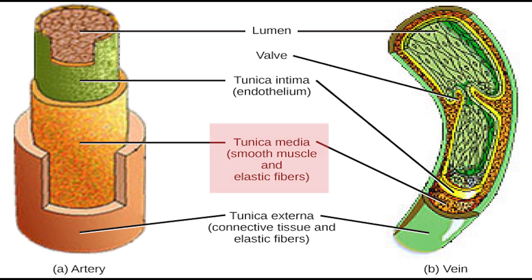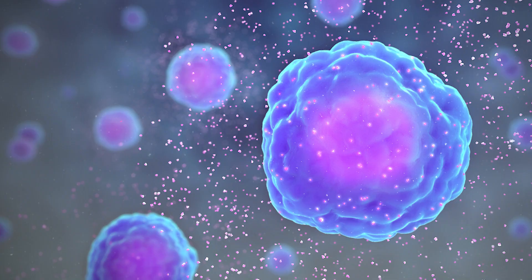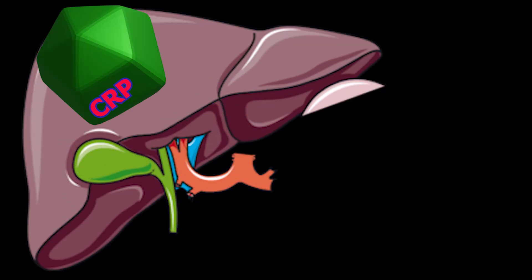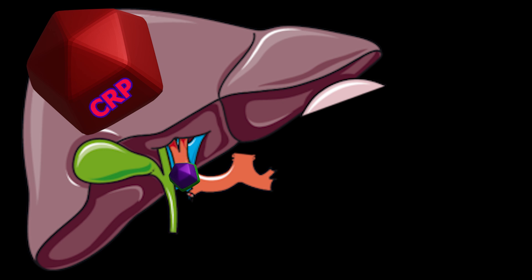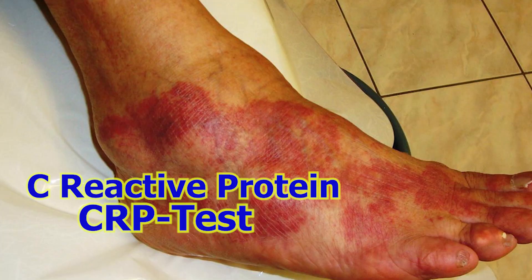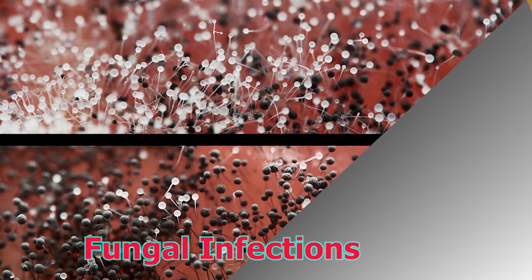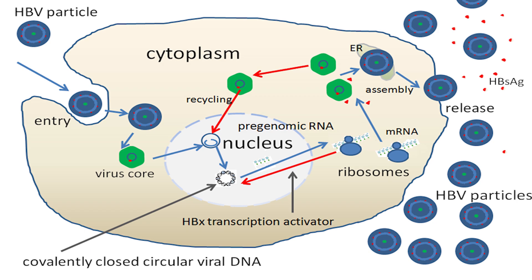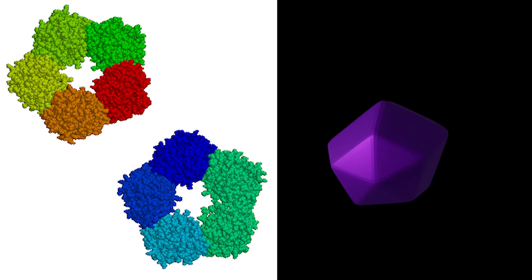Smooth muscle cells in the tunica media of many blood vessels also produce interleukin-6 as a pro-inflammatory cytokine. Interleukin-6 and other cytokines trigger the synthesis of C-reactive protein and fibrinogen by the liver in response to a wide range of acute and chronic inflammatory conditions, such as bacterial, viral, or fungal infections, rheumatic and other inflammatory diseases, malignancy, and tissue injury and necrosis.